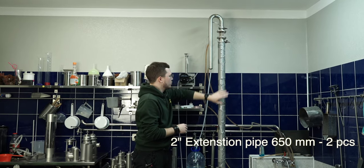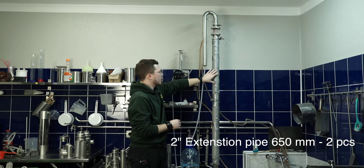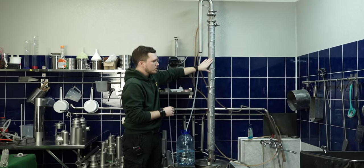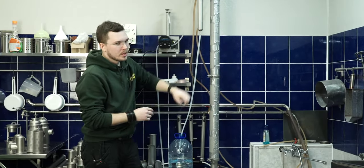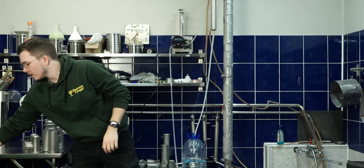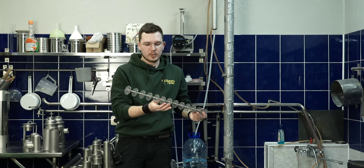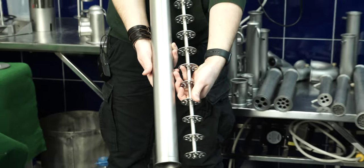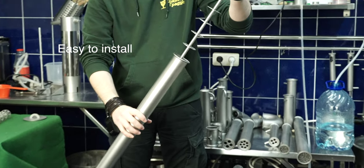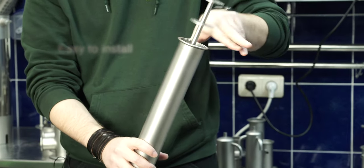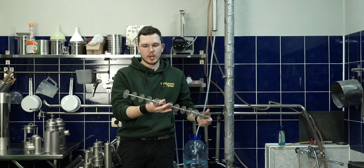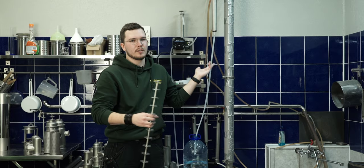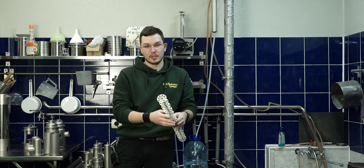Then we have two extension pipes which are 65 centimeters, and inside of them these plate units are installed. These are made for our extension pipes, so if you already bought a two-inch distiller, you can install these units to your extension pipe and build a continuous still if you like to do it in the future.